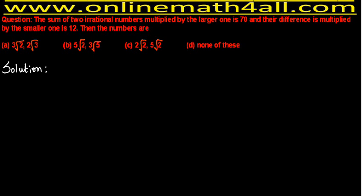The question on the board is: the sum of two irrational numbers multiplied by the larger one is 70, and their difference multiplied by the smaller one is 12. The four options are: Option A — 3√2 and 2√3; Option B — 5√2 and 3√5; Option C — 2√2 and 5√2; and Option D — none of these.